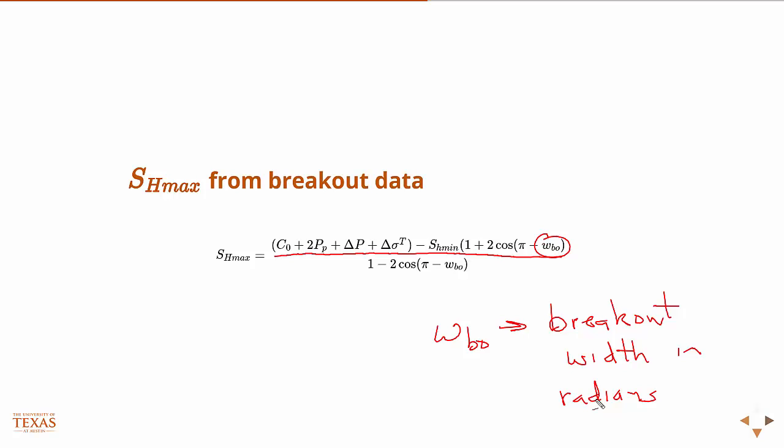So then, if we have SH min, if we have data on the breakout strength, and we also know the unconfined compressive strength of the rock, then we can find SH max. So SH max is the hardest of the three principal stresses to determine in magnitude, because the vertical we can estimate from the overburden stress, the SH min we can get from some type of hydraulic fracture test, but then we have to infer SH max from that data and other information.